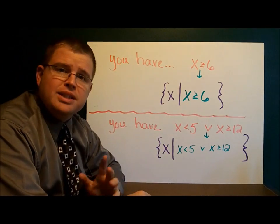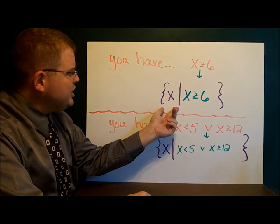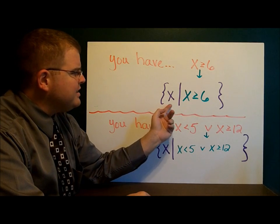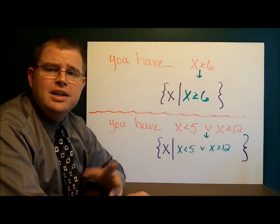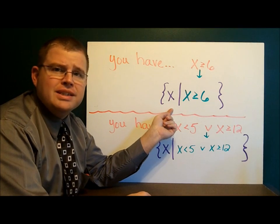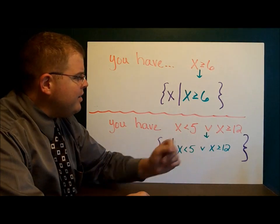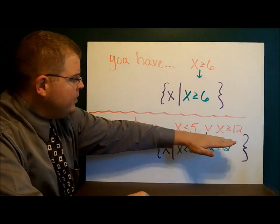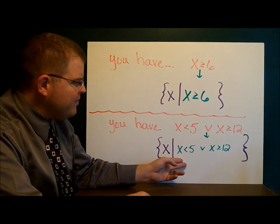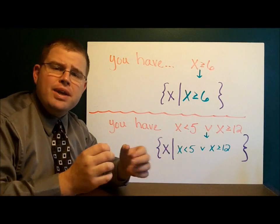Suppose you have the set x is greater than or equal to 6 and want to write it in set builder notation. All you have to do is write the squiggly braces with 'x such that' and put everything else right inside — so we get 'x such that x is greater than or equal to 6.' A lot of mathematicians like set builder notation because it says right out front what the variable is. Suppose you have a union: x is less than 5 combined with x is greater than or equal to 12. We take that whole thing and put it inside the package: 'x such that x is less than 5, or x is greater than or equal to 12.' Set builder is really just like a box — you take what you already have and put it inside.